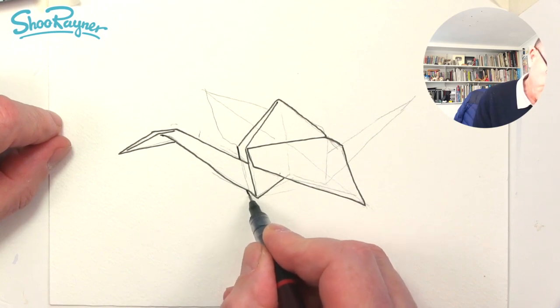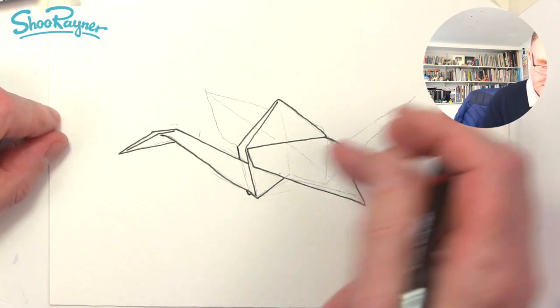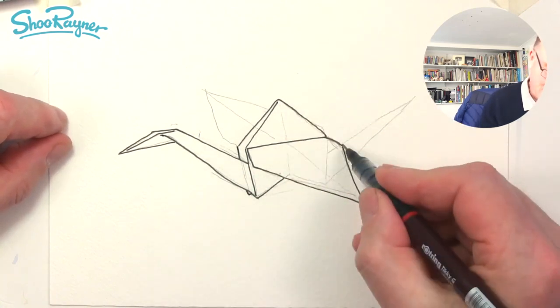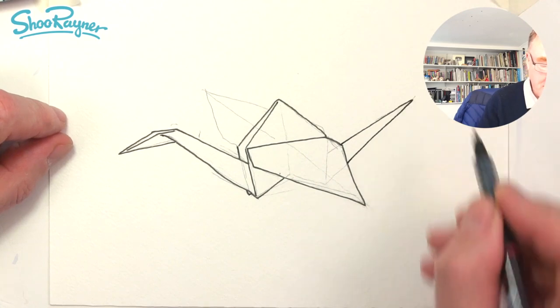We're maybe going to see a tiny little bit of the other one underneath there. We're not going to see any of the back leg as it were, and then we can draw that and that there like that.